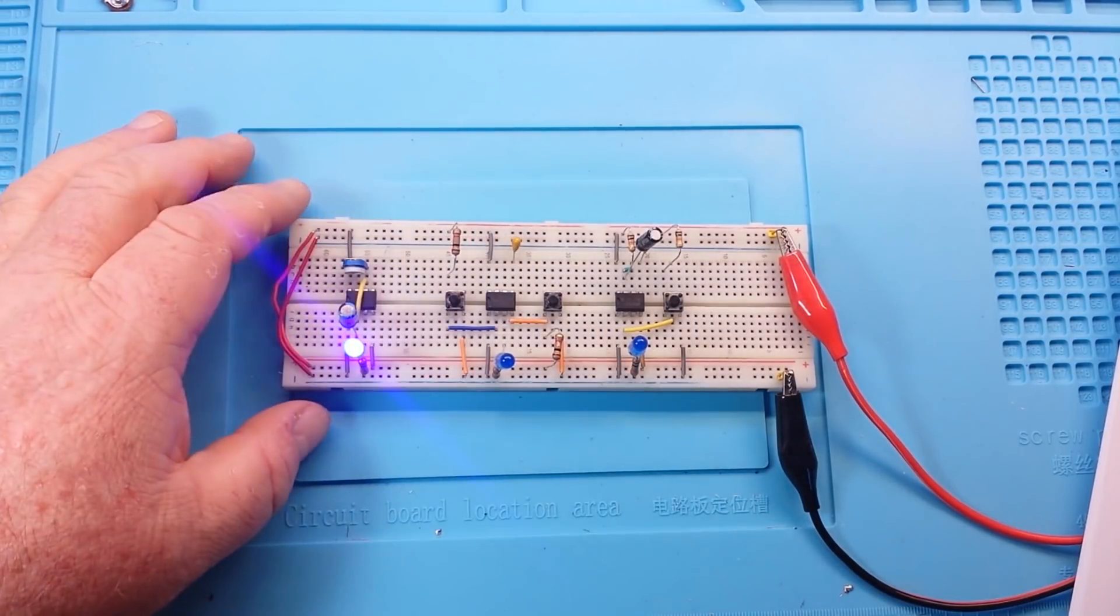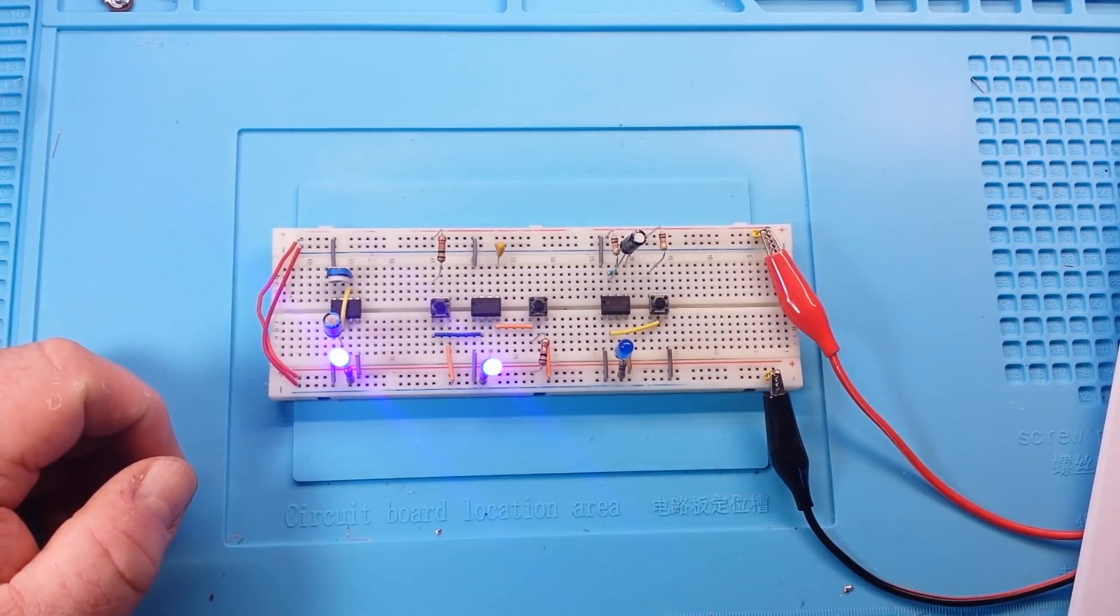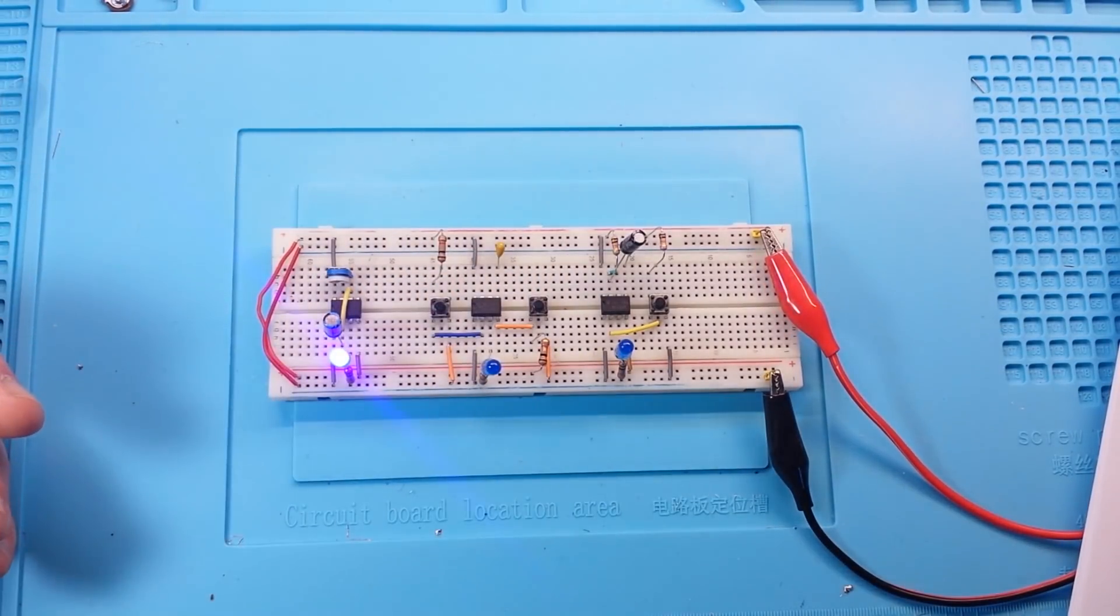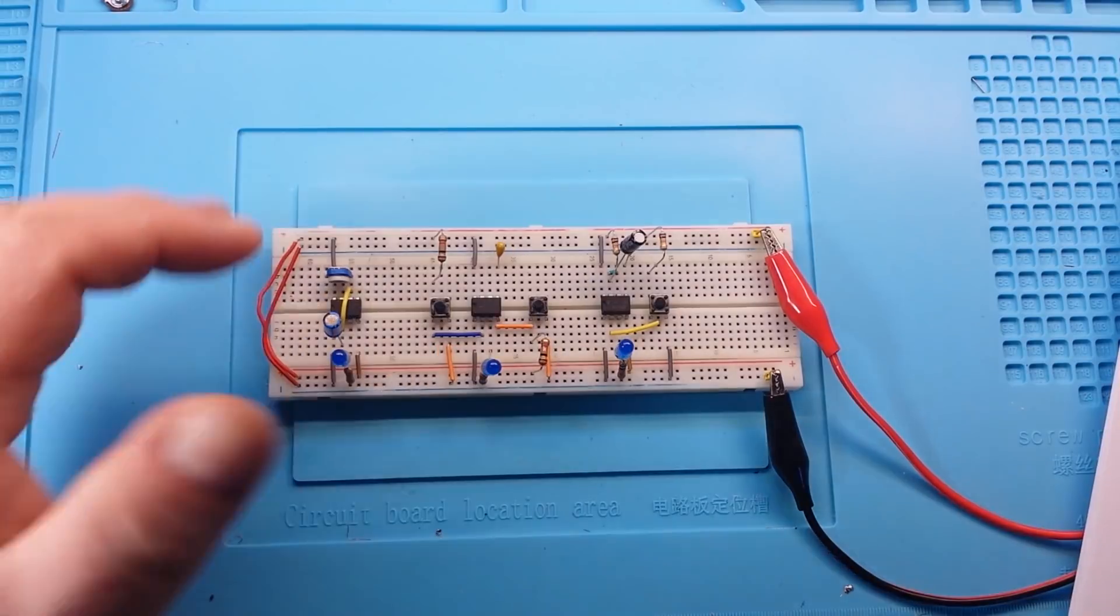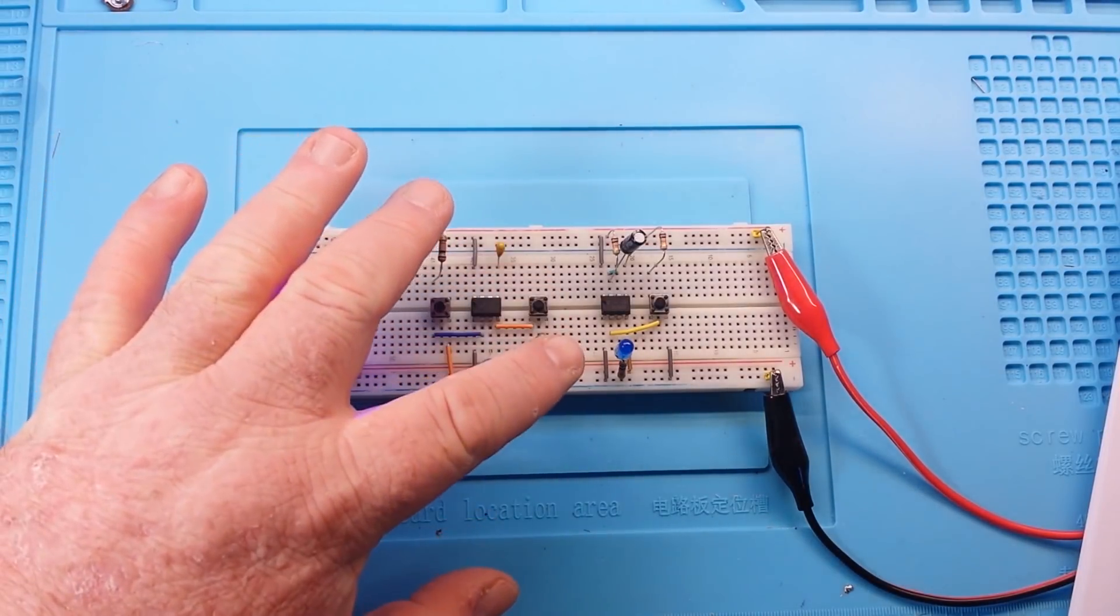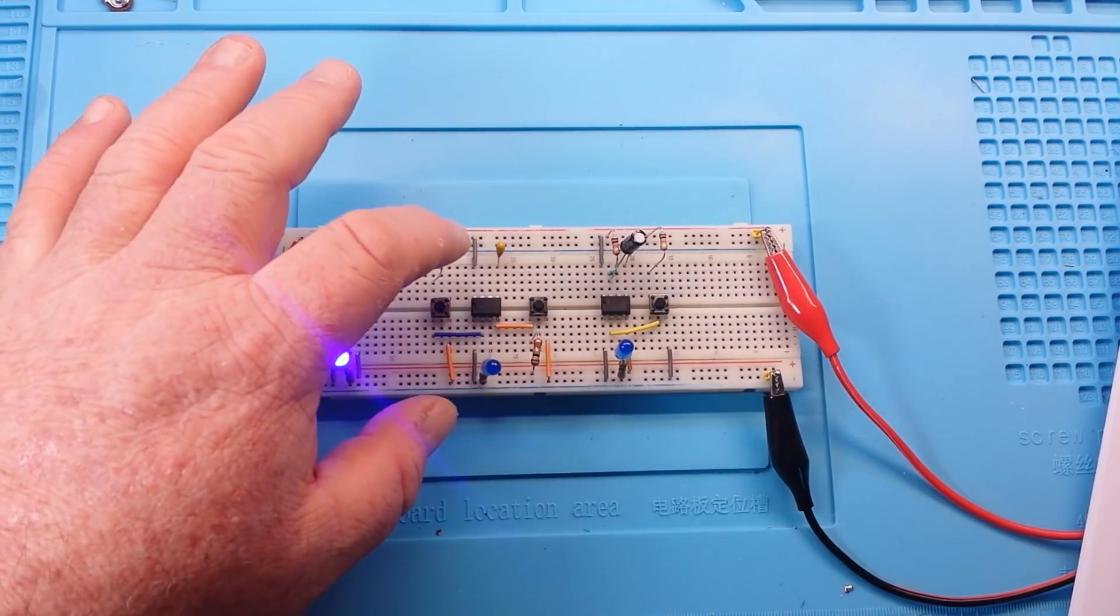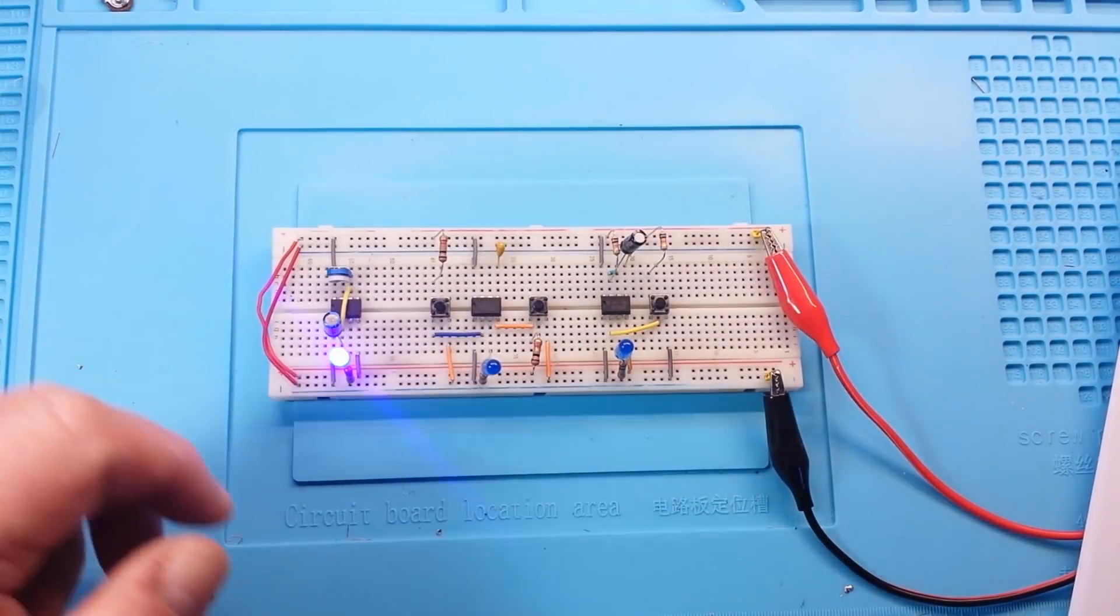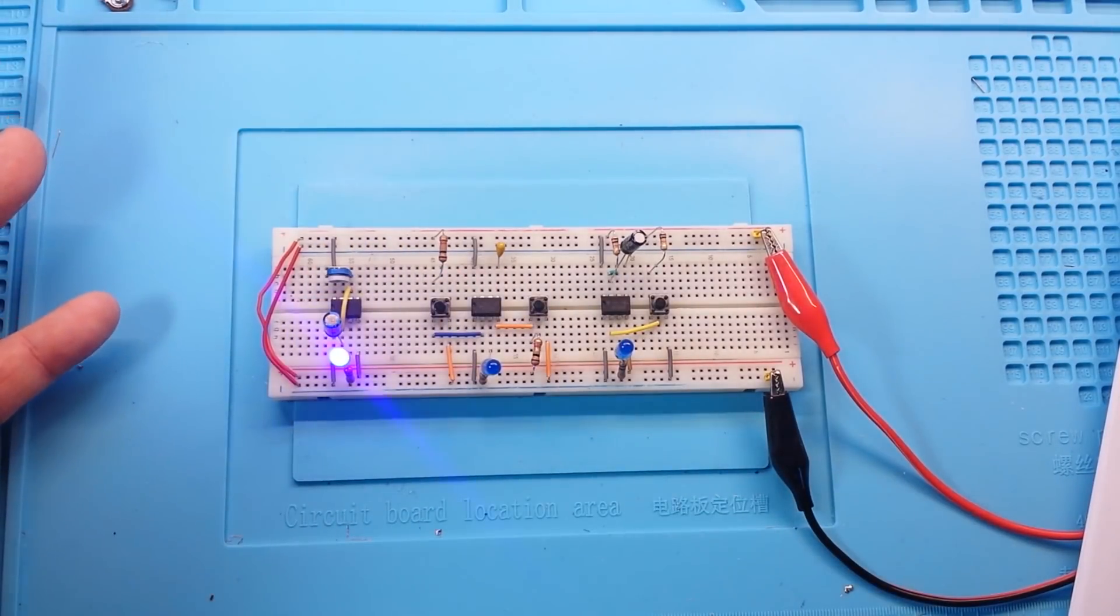Next we have the bi-stable mode. When I ground the trigger pin, it turns on. When I ground the reset pin, it turns off. No capacitors or resistors are used for timing. We simply have current limiting resistors, these are 10k apiece, used on the switches on the pull-up and the pull-down here. And then we have a bypass capacitor here. So, we ground the trigger, it turns on. Ground the reset, it turns off.